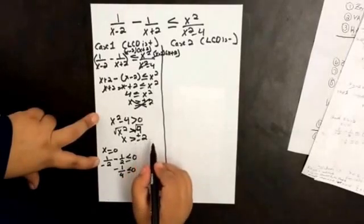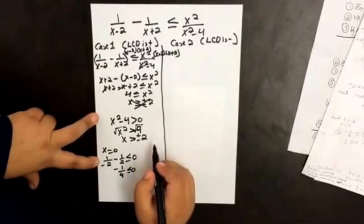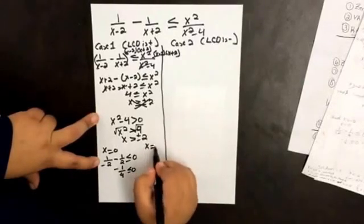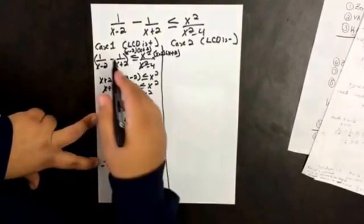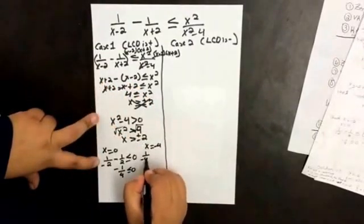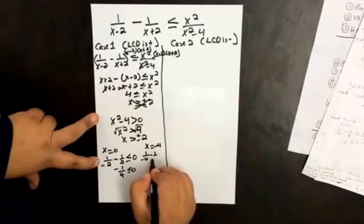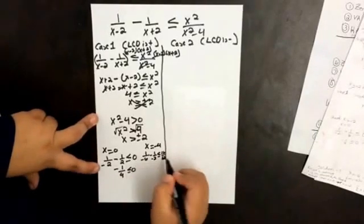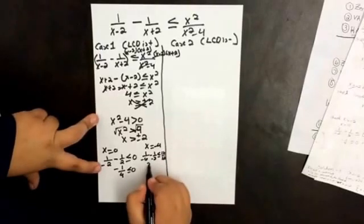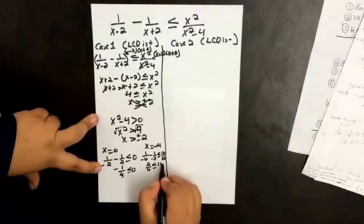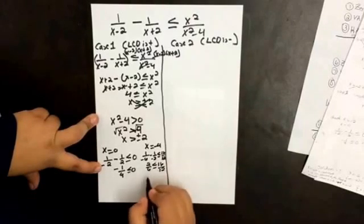So now what if we check when x is less than negative 2? Let's try x equals negative 4. When we plug it back into our inequality, we get 1 over negative 6 minus 1 over negative 2 is less than or equal to 16 over 12, which simplifies to 1 half is less than or equal to 16 over 12, which is true.